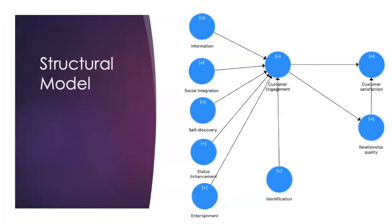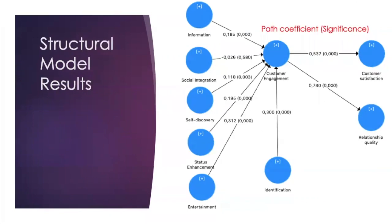Here's the structural model with the identification construct, as well as the five motives that should lead to customer engagement in the brand community. The outcomes of this engagement are relationship quality and customer satisfaction. In the model results, you can see the path coefficients for each construct. Entertainment was found to be the most important construct in explaining customer engagement in brand communities. This is followed by identification, status enhancement, information, and self-discovery. The social integration construct didn't have a significant relationship to the customer engagement construct, which meant that it was excluded from further analysis.